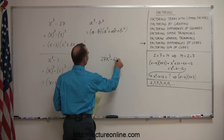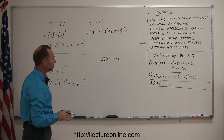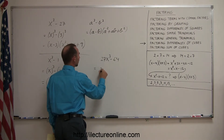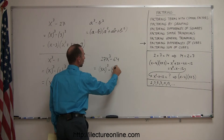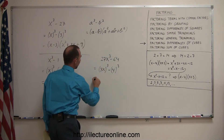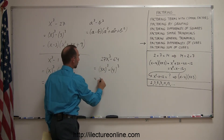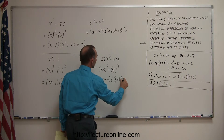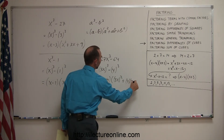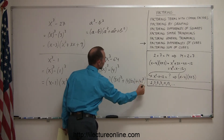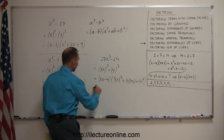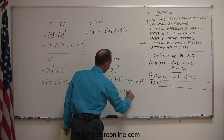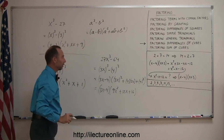How about 27x cubed minus 64? To recognize this as a difference of cubes, you need to see that 27 is 3 cubed and 64 is 4 cubed, so this can be written as 3x quantity cubed minus 4 cubed. The factored form is 3x minus 4, times the first squared plus the product of the two plus the second squared. Simplifying, that gives 3x minus 4, times 9x squared plus 12x plus 16.